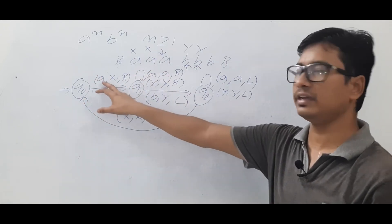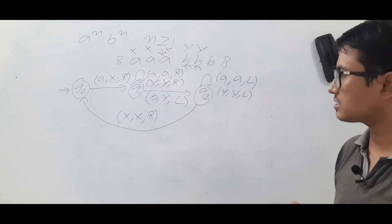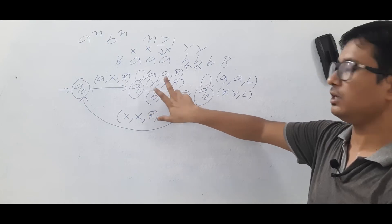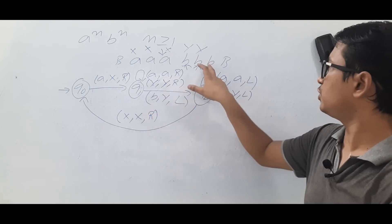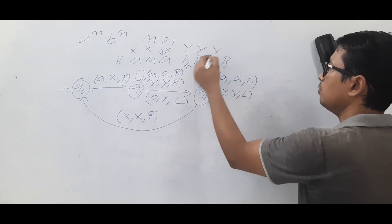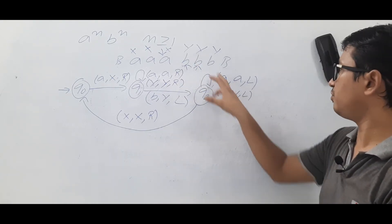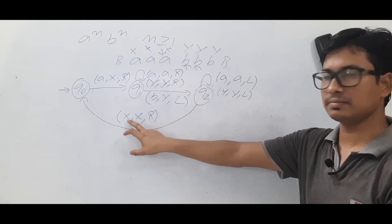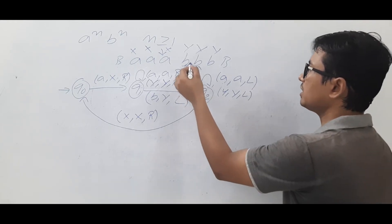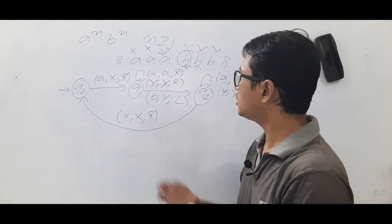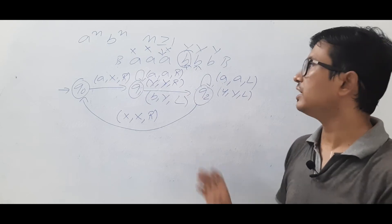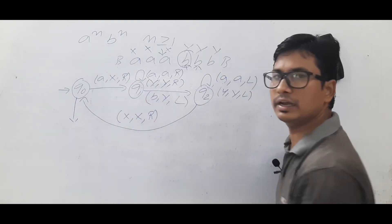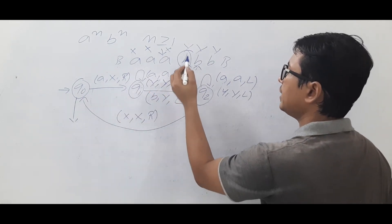Again we mark the next A as X and move right, passing over Y's until we find another B, mark it as Y, and move left. This process repeats until all A's are marked as X. We return to Q0 on seeing X and move right — the tape head is now pointing into the Y region.